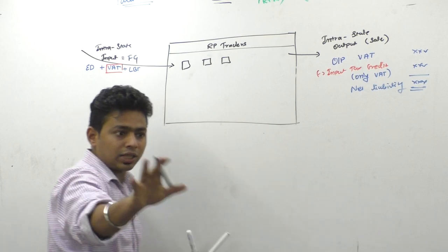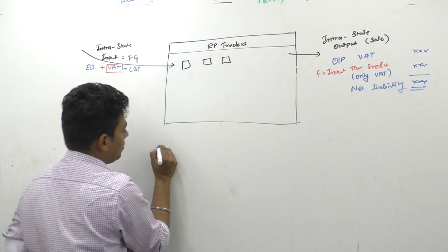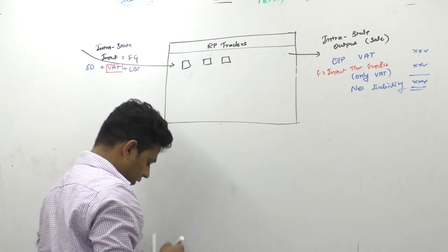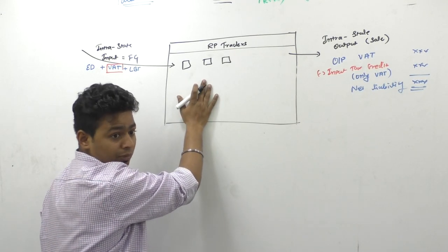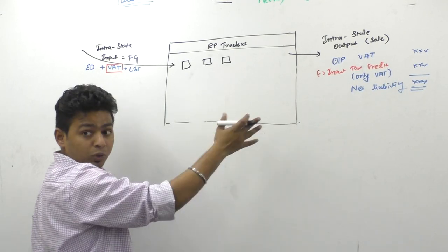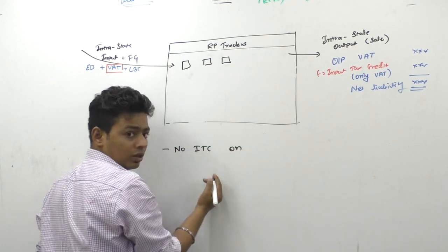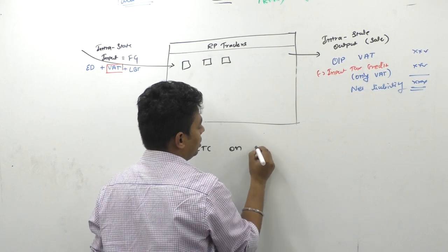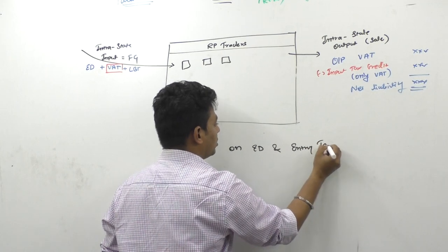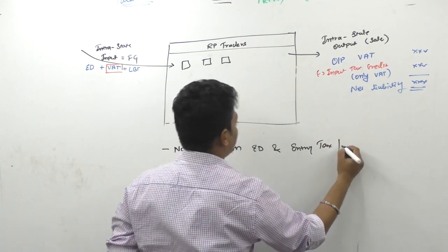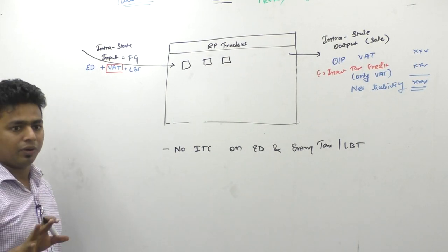All right. Matter ends here. This much understanding everybody is having in this classroom. Point one. Let's write points here. Demerits of VAT system. Demerits of VAT system or input tax credit system. No ITC on excise duty and entry tax or local body tax or purchase tax. So it is not available.